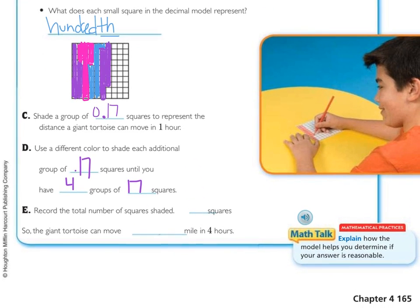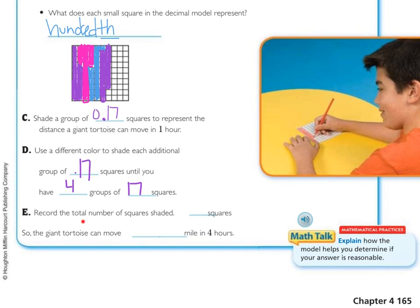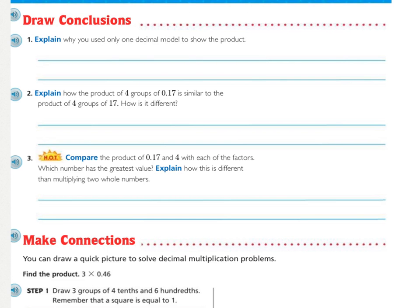Your model should look something similar to mine. Now part E is to record the total number of squares shaded. We have six rows of 10, and how many extra? Well there's two not here, so that's eight. So we have 68 squares that are shaded, so the giant tortoise can move 68 hundredths of a mile in four hours.